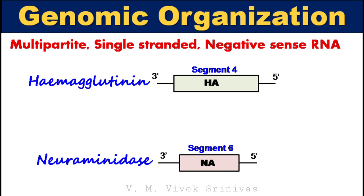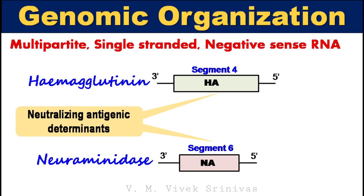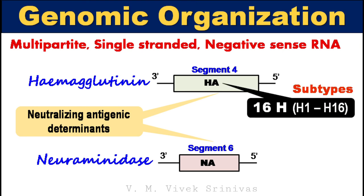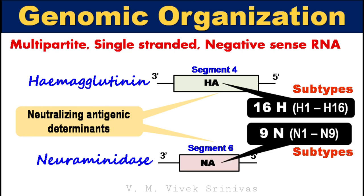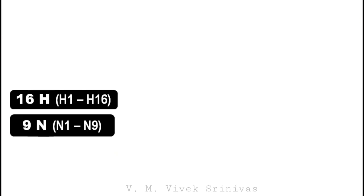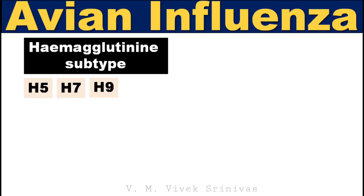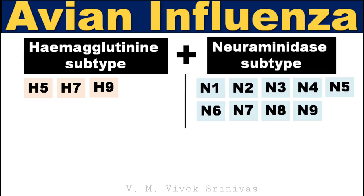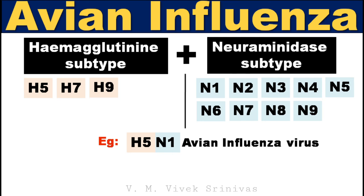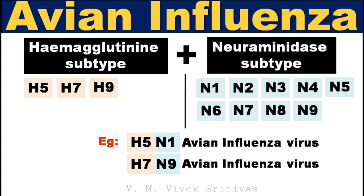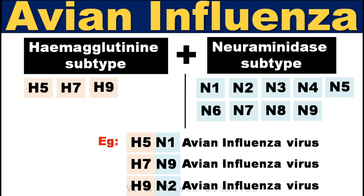Segment 4 and segment 6 code for hemagglutinin and neuraminidase respectively. These two proteins play a major role as neutralizing antigenic determinants. Within hemagglutinin there are 16 subtypes named H1 to H16, and within neuraminidase there are 9 subtypes named N1 to N9. Two more new subtypes have been proposed in both proteins, identified only in bats. Influenza viruses infecting avian species possess hemagglutinin subtypes H5, H7, or H9, along with any one of the 9 neuraminidase subtypes. For example, H5N1 possesses hemagglutinin 5 and neuraminidase 1; H7N9 possesses hemagglutinin 7 and neuraminidase 9; and H9N2 possesses hemagglutinin 9 and neuraminidase 2.